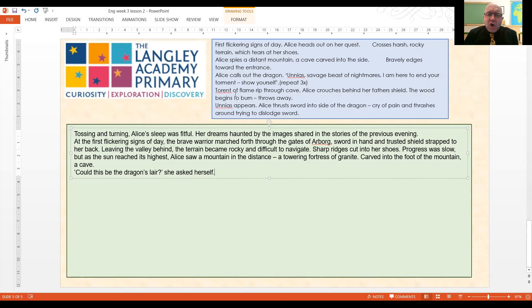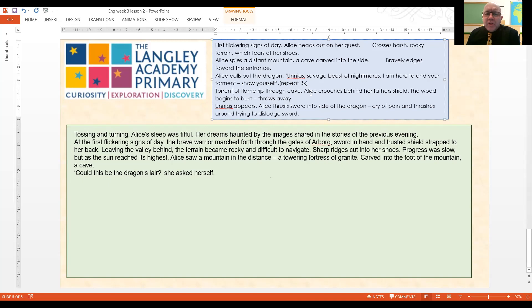So once you've been disturbed, we get torrent. A flame ripping through the cave. A torrent of flame ripping through the cave. And we've got Alice hiding behind her father's shield. But remember, it's a wooden shield. So think about what would happen if a dragon's flame hits a wooden shield. It would burn. So she's going to have to hide behind some other form of barrier. Maybe the rocks outside the cave. We're on a mountain side here. So there's going to be large rocks dotted around.